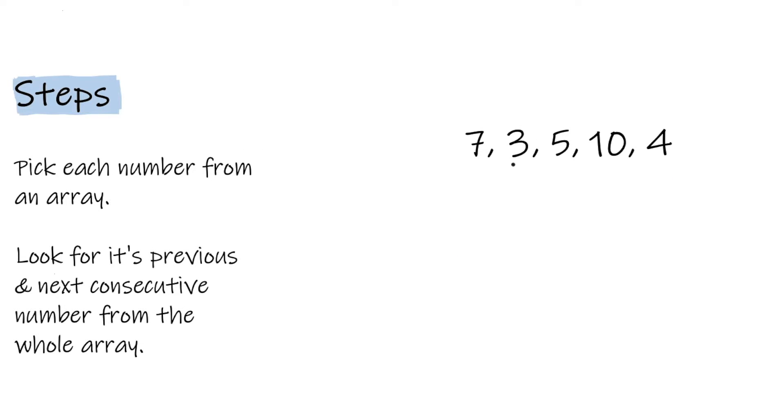Now we move to the next element, 3, and look for its next consecutive number, 4, in the whole array. If we find it, we again try to find the next consecutive number, 5, in the whole array, and so on until there is no next consecutive number.